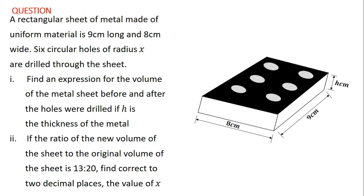The question for this video is: a rectangular sheet of metal made of uniform material is 9 centimeters long and 8 centimeters wide. Six circular holes of radius x are drilled through the sheet. Part (i): find an expression for the volume of the metal sheet before and after the holes were drilled, if h is the thickness of the metal. Part (ii): if the ratio of the new volume of the sheet to the original volume is 13 to 20, find correct to two decimal places the value of x.